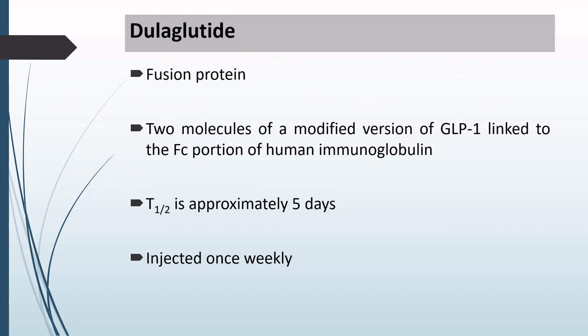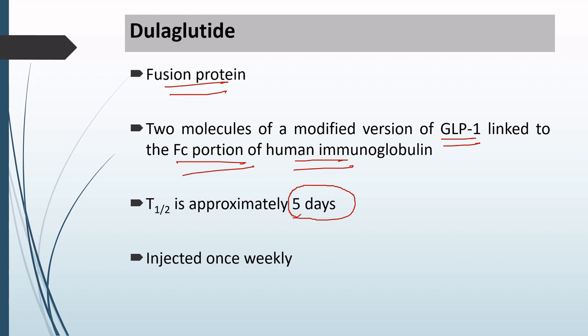Next is Dulaglutide. Dulaglutide is a fusion protein in which there are two molecules of a modified version of GLP-1 linked to the Fc portion of human immunoglobulin. The T-half is approximately 5 days, so it has a very high T-half, and naturally this drug is given once weekly.